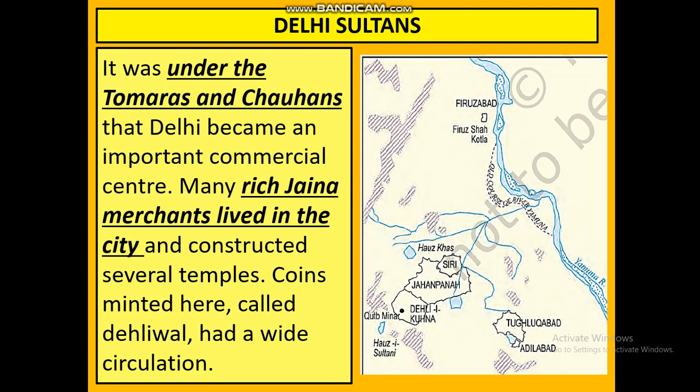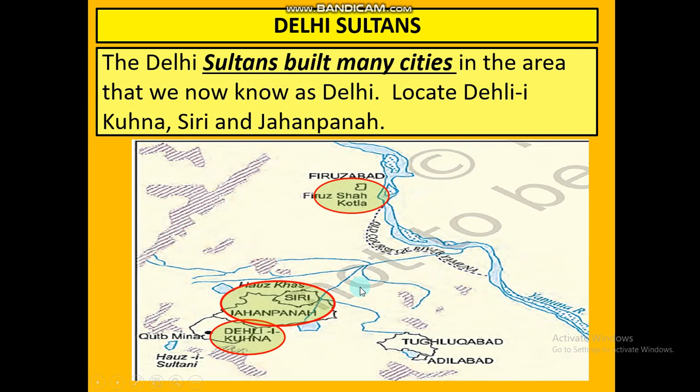Many rich Jain traders and merchants used to live in the city of Delhi, making it a very rich city. They constructed many temples, which required a lot of money, so only rich people could construct such temples. Coins were also minted in Delhi, called Delhi-wal.